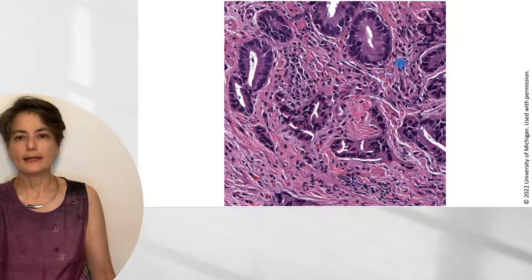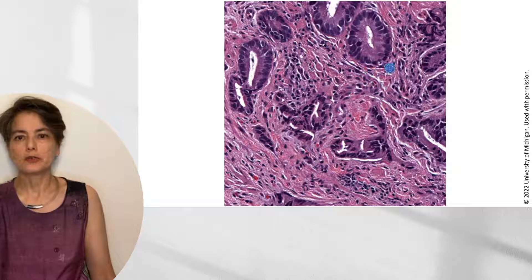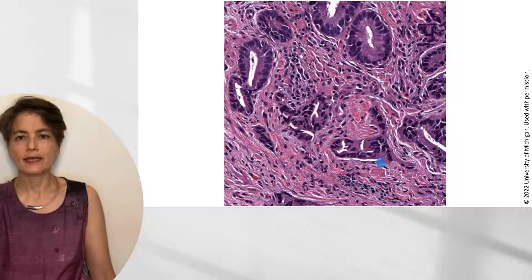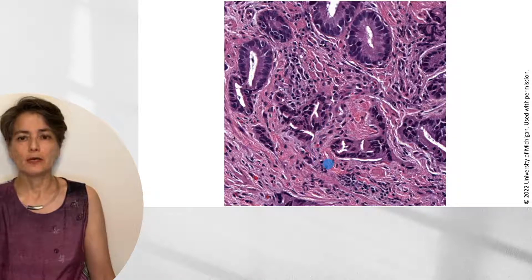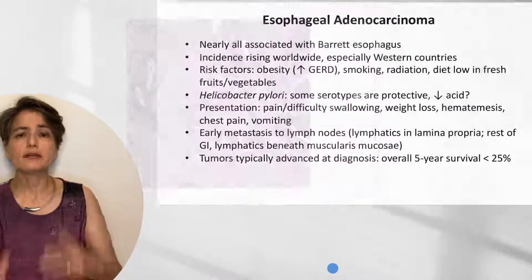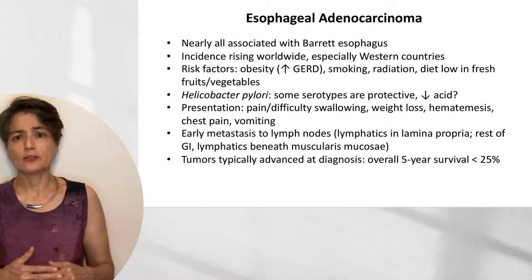Here's a gland showing dysplasia but not invasive carcinoma — recognized by the rounded smooth border. But here we have angulated glands invading into the surrounding tissue, causing a desmoplastic reaction. So in this one specimen, we have Barrett esophagus, high-grade dysplasia, and invasive adenocarcinoma. Let's now properly discuss esophageal adenocarcinoma.